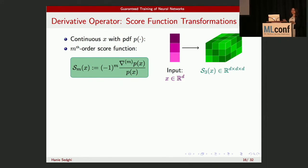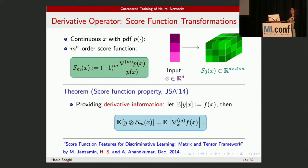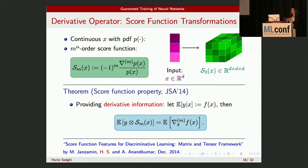We showed that this score function is actually that magical function — it gives you the derivative information. If the expected value of the label given the input is f(x), then the cross moment between the label and the m-th order score function gives you the m-th order derivative of the function. Thinking back to our neural network: if I form the cross moment between the label and the third-order score function, it gives me a tensor, and decomposing that tensor gives me the weight matrix for the first layer.